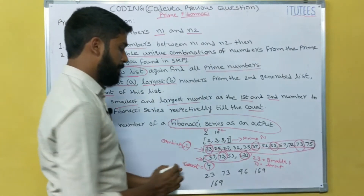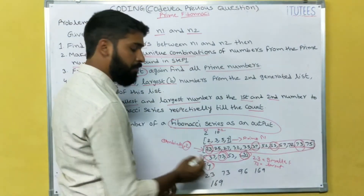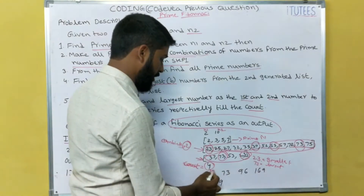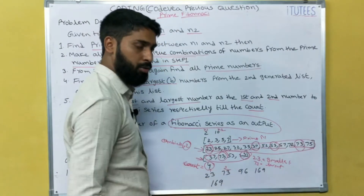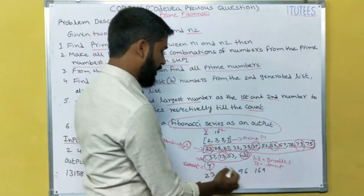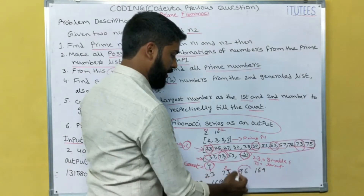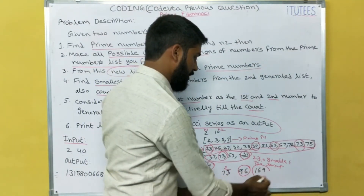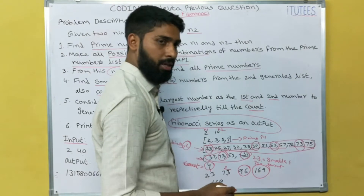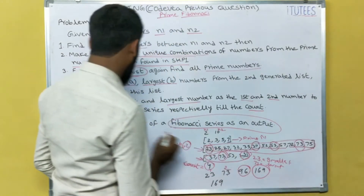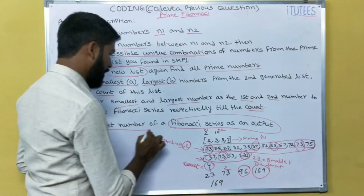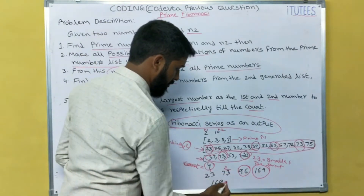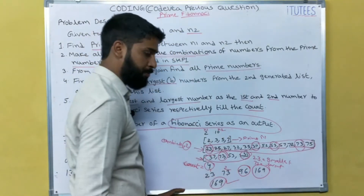Now print the Fibonacci series up to 4 numbers. 23 is the small number, 73 is the second number. What is the third number? 23 plus 73 equals 96. What is the fourth value? 73 plus 96 equals 169. Now what are we going to print? Print the last number of the Fibonacci series. What is the last number? 169. So this is the output.